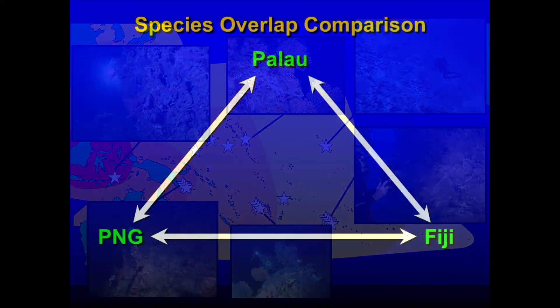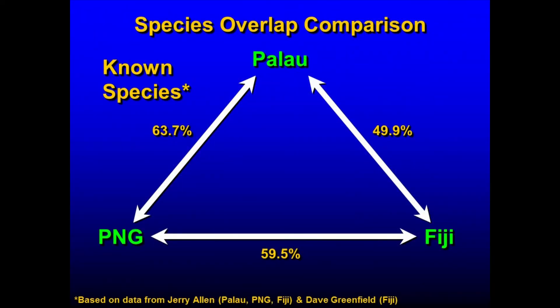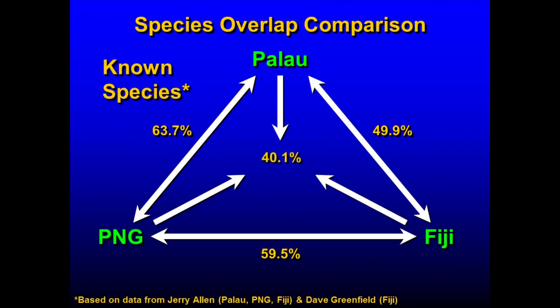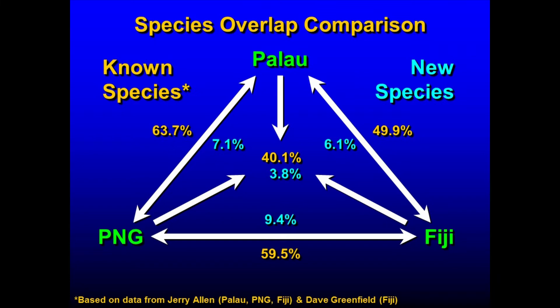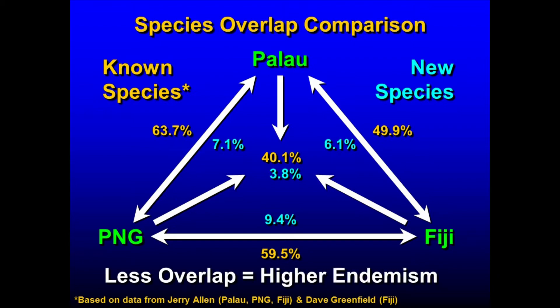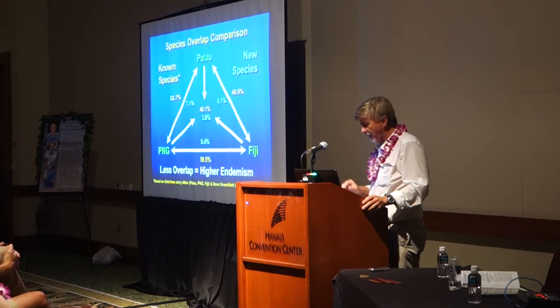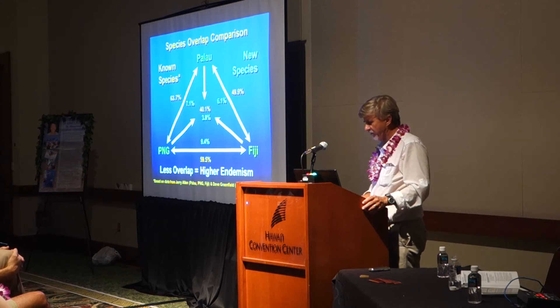The other new pattern we found, which we weren't expecting, is that every place we went seemed to have its own unique set of deep reef fishes. Looking at the shallow reef fauna from Palau, New Guinea, and Fiji, there's about 40% overlap in species across all three locations combined. But among our new deep species, we were finding much lower rates of overlap — almost 10 times lower. Less overlap essentially translates to higher endemism. So we found no obvious attenuating diversity across the Pacific, and we found higher rates of endemism.